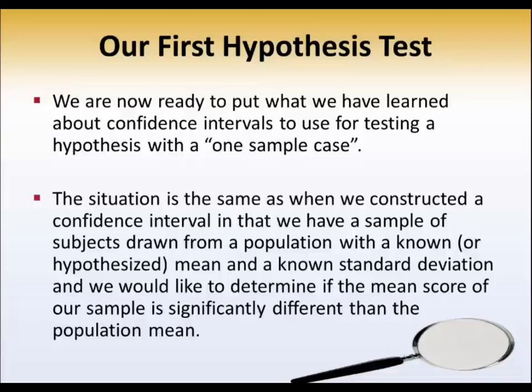The situation is the same as when we constructed the confidence interval. We'll have a sample of subjects from a population with a known mean and a known standard deviation. We'd like to determine whether the mean score of our sample is equal to or significantly different from the population mean.